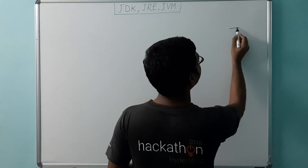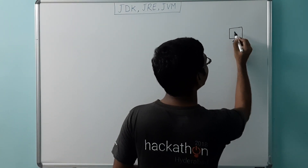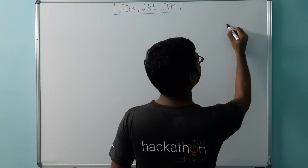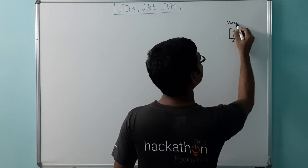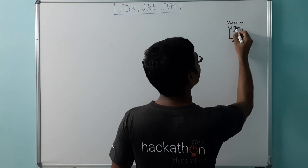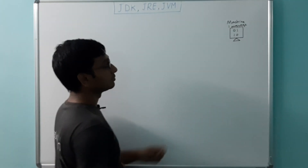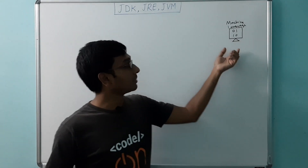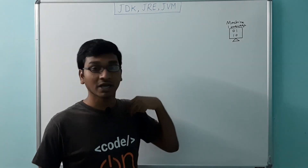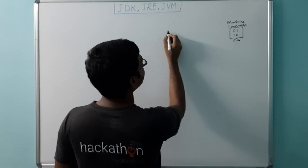We have a computer system which can understand only binary code. This we call it as machine language. A computer system can only understand machine language, and providing instructions in binary code to the machine is not that easy for us. So then came assembly language.